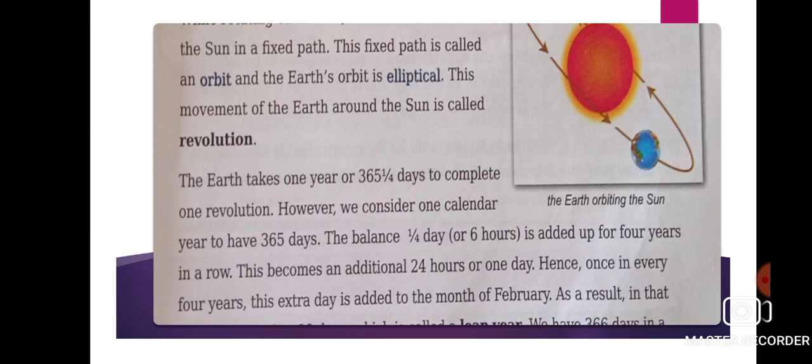The next is revolution. While rotating on its axis, the Earth moves around the sun in a fixed path. You can see the sun and the Earth moving round and round around the sun. The fixed path is called an orbit, and the Earth's orbit is elliptical. This movement of the Earth around the sun is called revolution. Elliptical means oval in shape — it is not circular, it is oval like an egg.